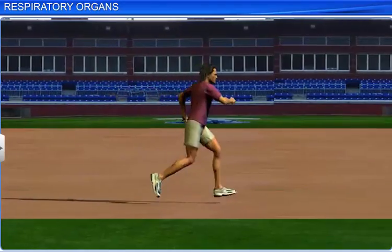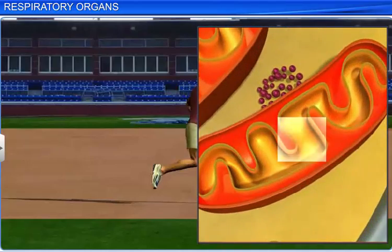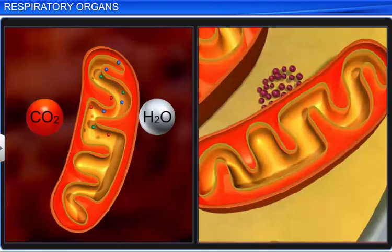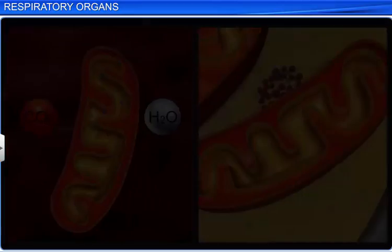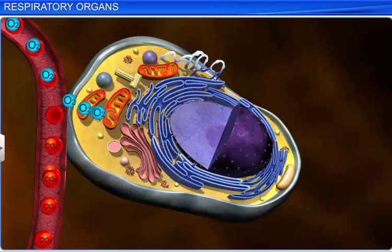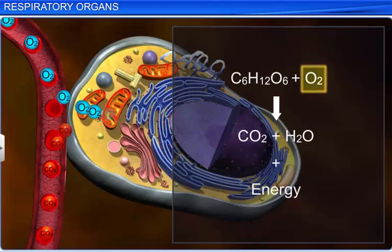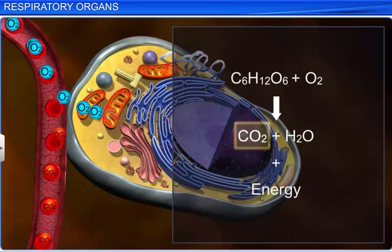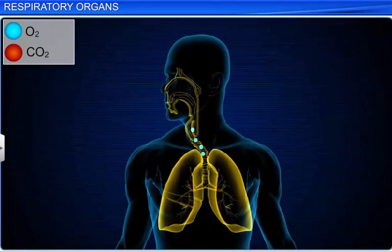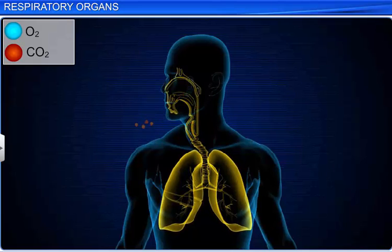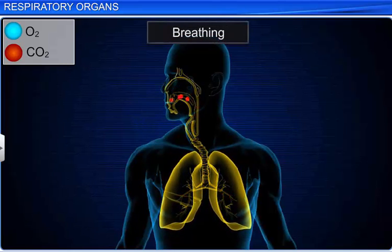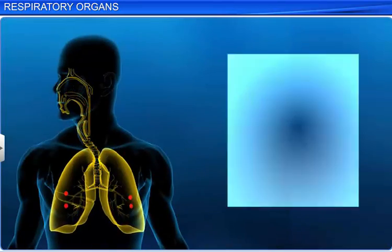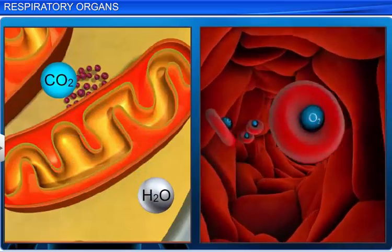To perform any activity, we need energy. This energy is obtained from the breakdown of organic molecules such as sugars, fats, and proteins inside the body's cells. During the process of breaking down organic molecules, the cells continuously use oxygen and release carbon dioxide. To provide fresh oxygen to the cells and remove carbon dioxide, which is harmful to them, living organisms inhale oxygen and exhale carbon dioxide. This process of inhaling and exhaling is called breathing. The process of breathing accompanied by the breakdown of foods to produce energy is called respiration.